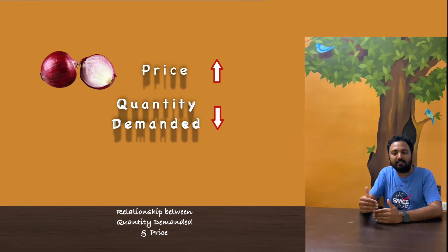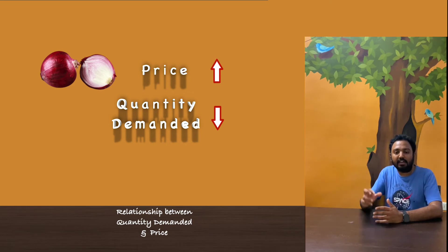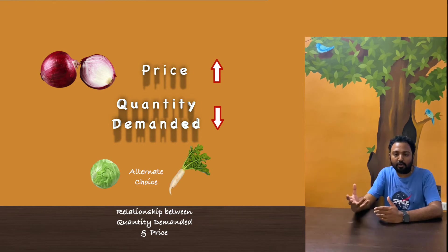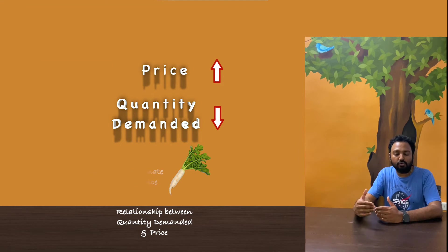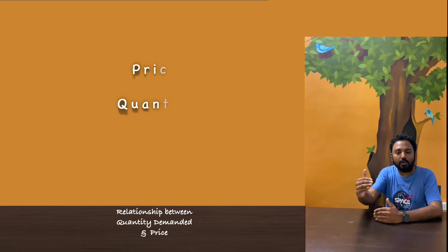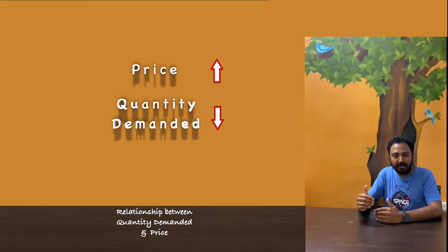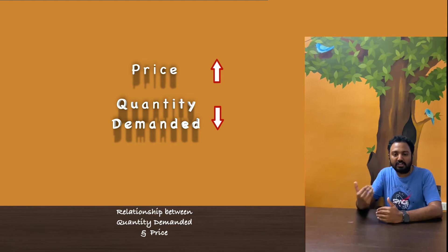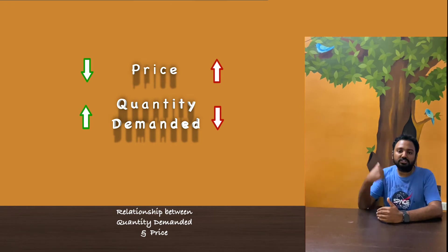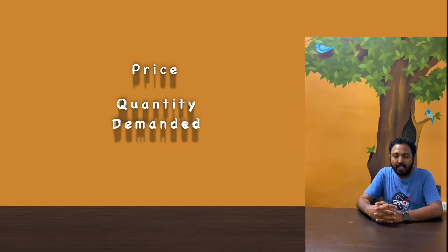As price increases, the quantity we were buying started getting reduced. We even find replacements — preferred cabbages, radishes, and other alternatives. That is what happens to the relationship between price and quantity demanded. As price rises, quantity demanded keeps decreasing — it is inversely proportional. This is the general relationship.